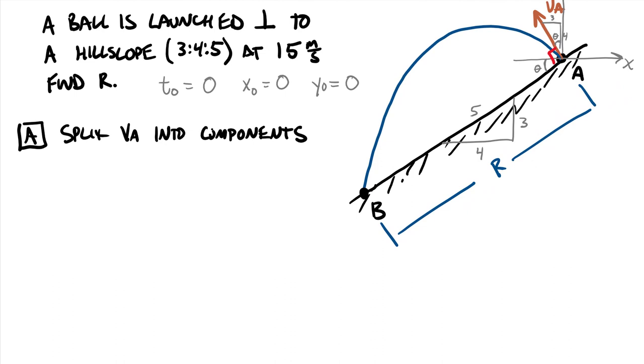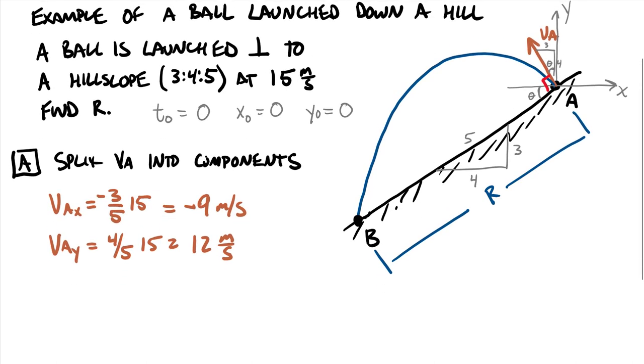So we can write that we have VA sub x is equal to 3 fifths, because 3 is along the horizontal, 5 is along the hypotenuse. So 3 fifths of 15. Now this is going to be a negative value. Negative because it's going opposite the x-axis. And so this is going to equal negative 9 meters per second. And VA sub y. This is going to be the 4 fifths side of that right triangle. So 4 fifths times 15. And this equals 12 meters per second. Because it's going upwards in the same direction as my positive y. That will give me a positive sign on my vertical component.